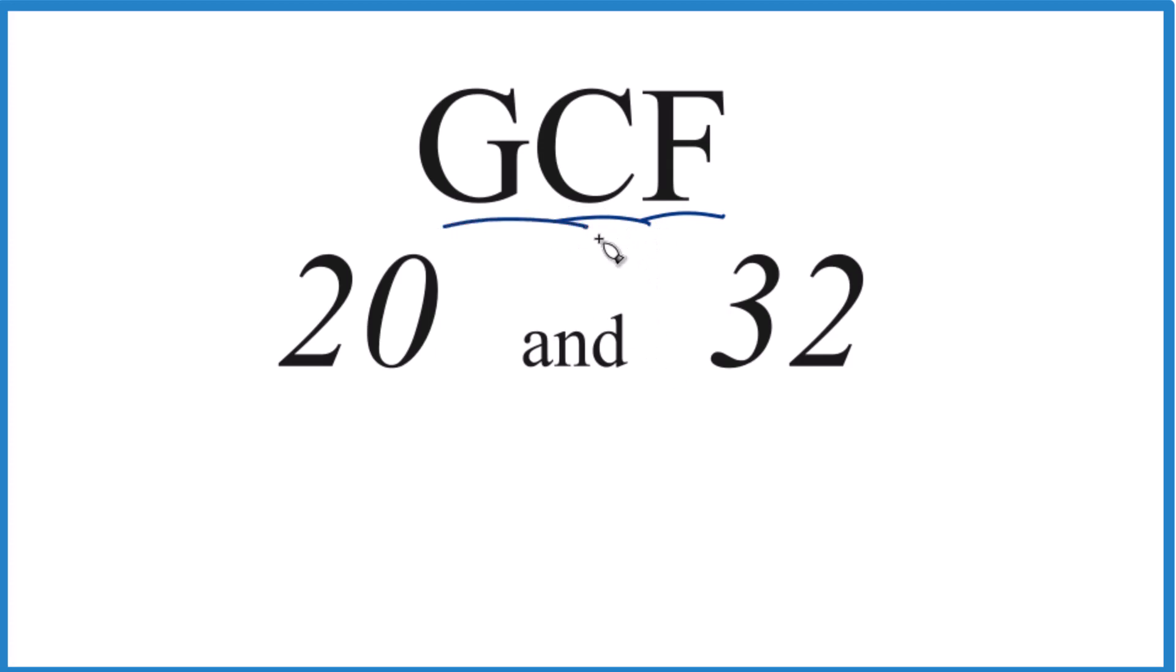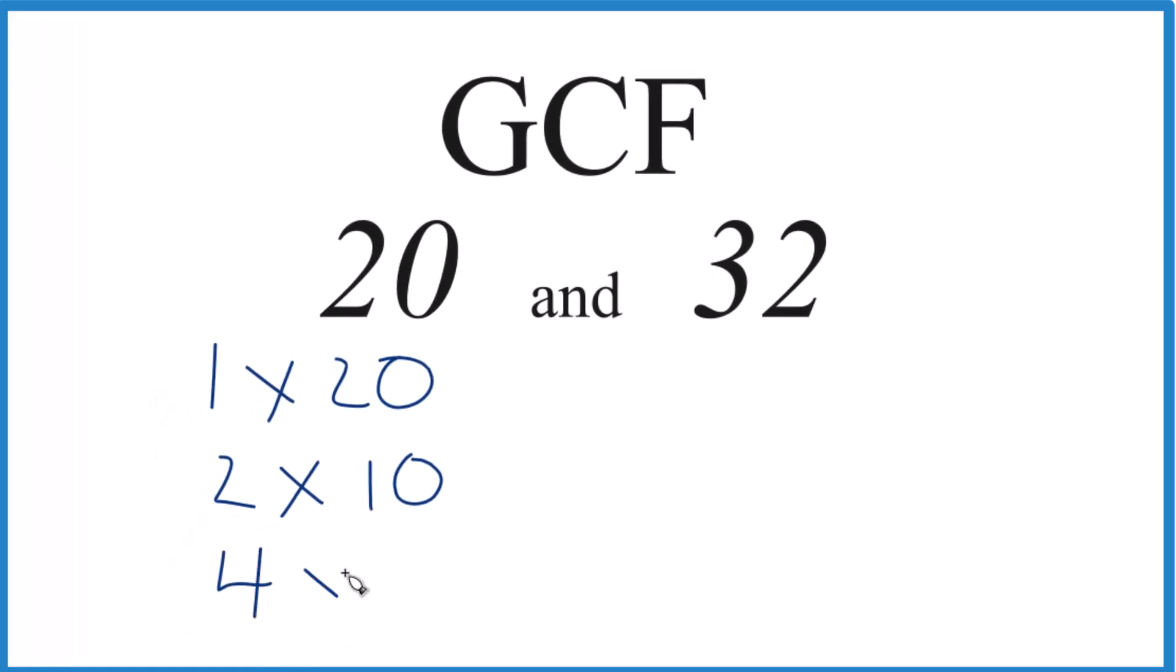For 20: 1 times 20 equals 20, 2 times 10, and 4 times 5. For 32: 1 times 32, 2 times 16, 4 times 8, and I think that's it for 32.